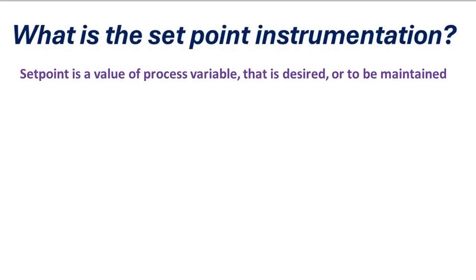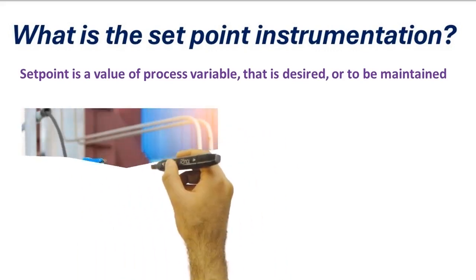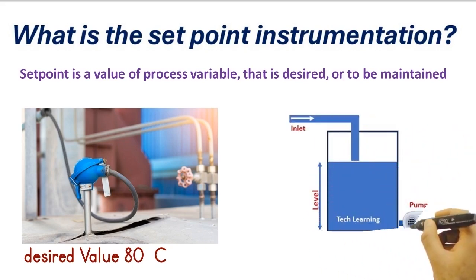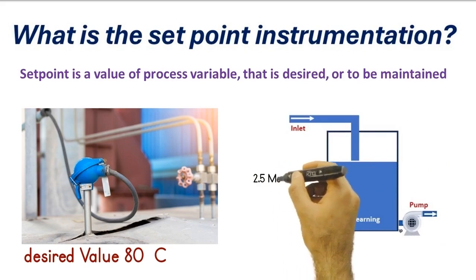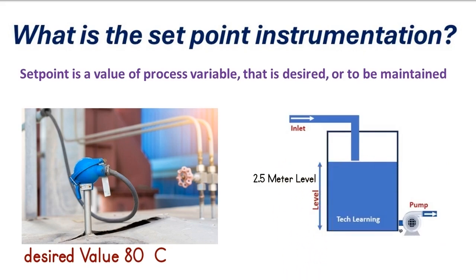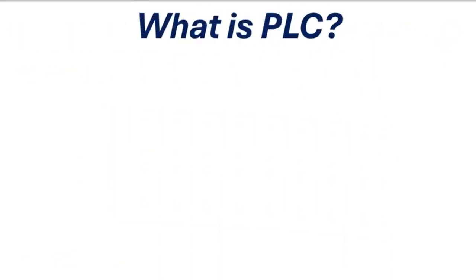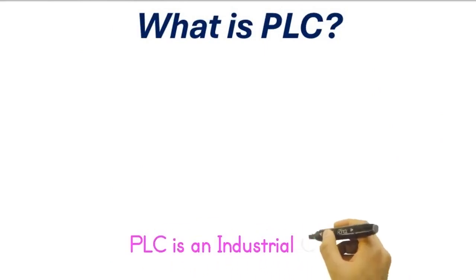What is the set point in instrumentation? In instrumentation, set point is a value of a process variable that is desired or to be maintained. For example, if the temperature of the process needs to be maintained at 80 degrees Celsius, then the set point is 80 degrees Celsius. Similarly, if the level of process fluid in a tank is to be maintained at 2.5 meters, then 2.5 meters is the set point.